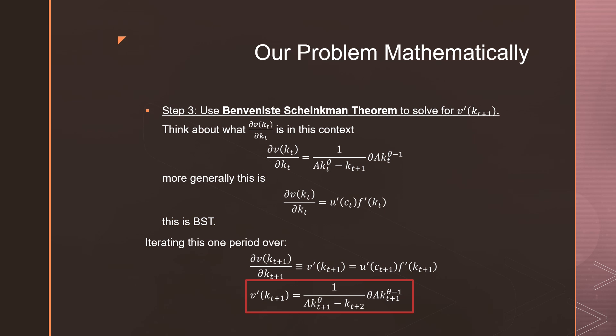So what we go and we get here is that this is just 1 all over a kt theta minus kt plus 1 times theta kt theta minus 1. More generally speaking, this is just the marginal utility from consumption in period t times the marginal product of capital in period one.